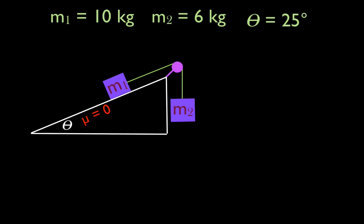Here is the situation we have. We have our inclined plane, inclined at an angle of 25 degrees. We have two objects: M1 is 10 kilograms, M2 is 6 kilograms. M1 is on the inclined plane. There is no friction — the coefficient of friction mu between the object and the inclined plane is zero. The two objects are attached to each other by a massless, inelastic string which goes over the massless, frictionless pulley.